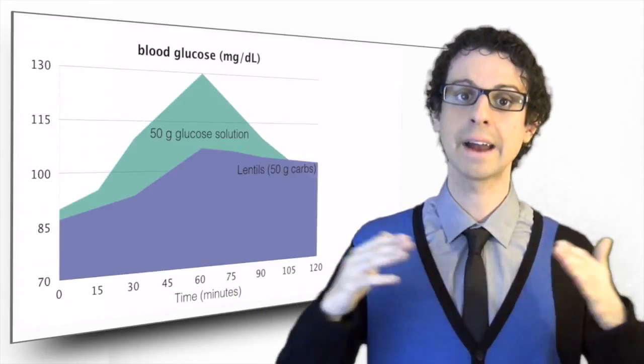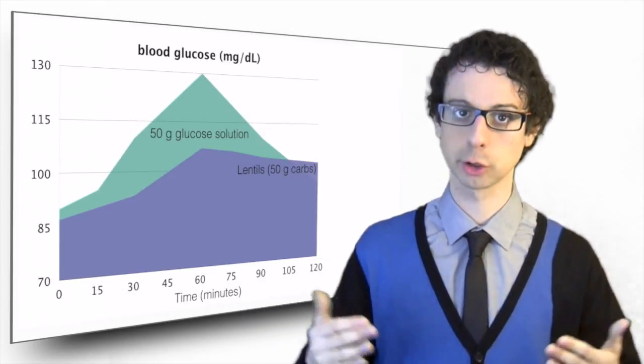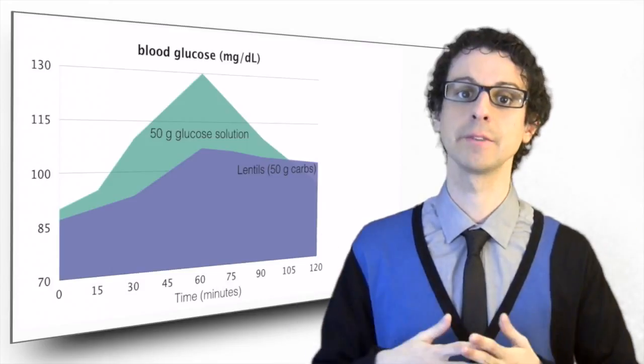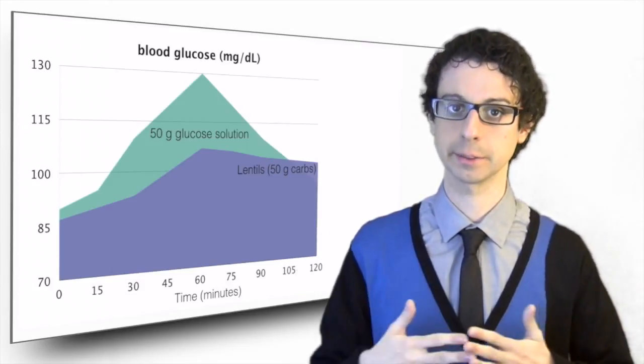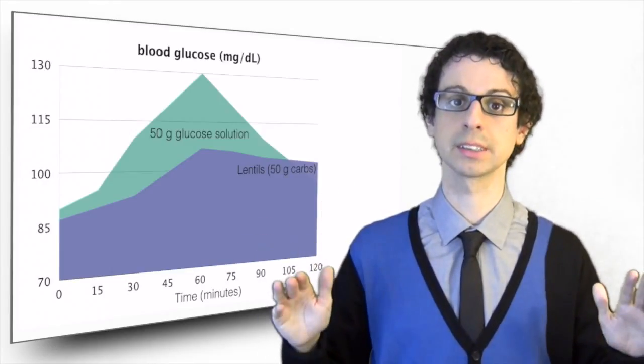So you calculate the area under the curve for your lentils and you divide it by the area you obtain for the solution of glucose, times 100 to get rid of the decimals and there you have your glycemic index of lentils. If you have worked well, you will get very similar numbers in all your different subjects.